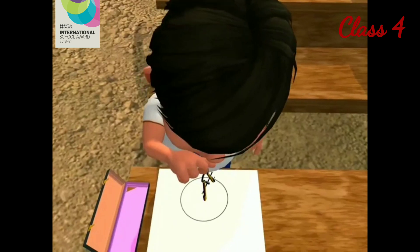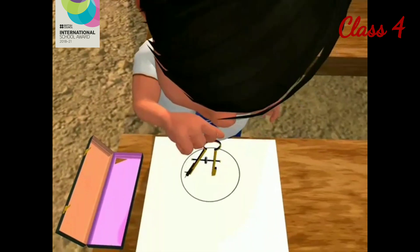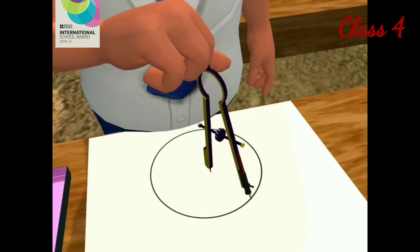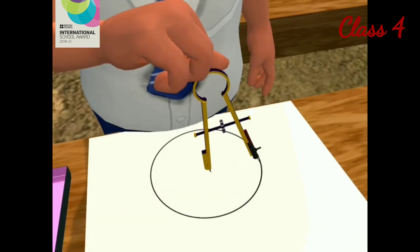As we saw in the story, we can draw the circle of fixed radius on the paper using a device called compass.